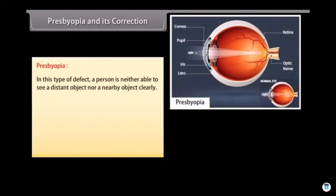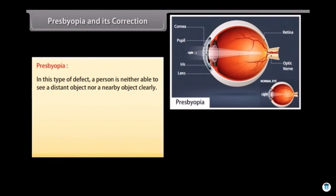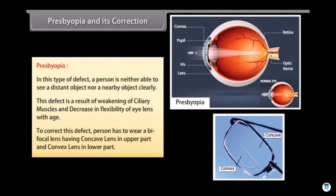Presbyopia and its correction: In this type of defect, a person is neither able to see a distant object nor a nearby object clearly. This defect is a result of weakening of ciliary muscles and decrease in flexibility of eye lens with age. A person has to wear a bifocal lens having concave lens in upper part and convex lens in lower part.